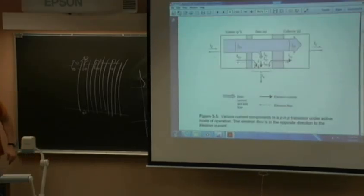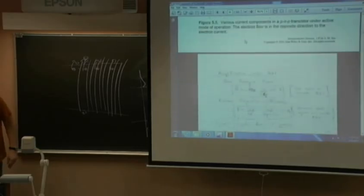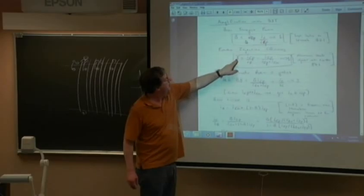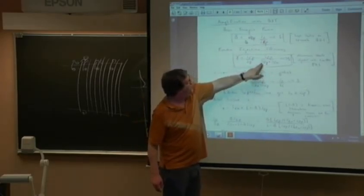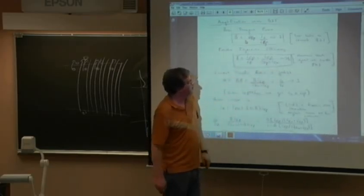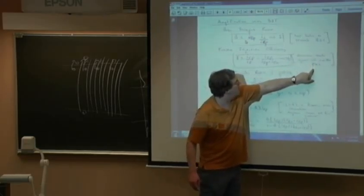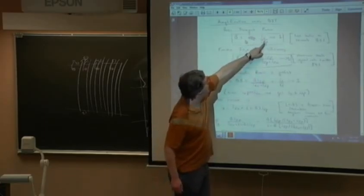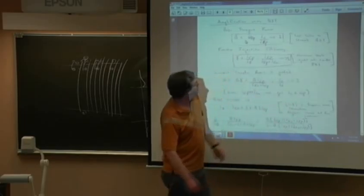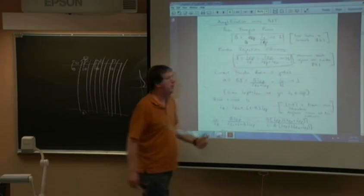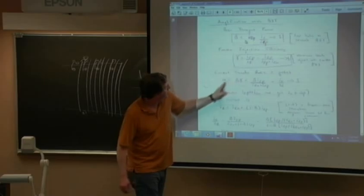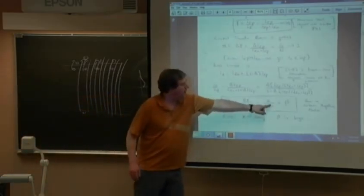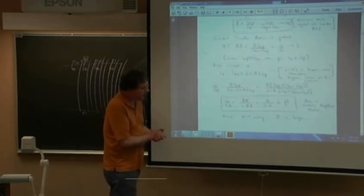Emitter injection efficiency γ is the ratio of hole current from the emitter over total emitter current (holes plus back-injected electrons). If back-injected electrons were zero, γ would be unity. Base transport factor α_T is collector current over emitter hole current — if holes are lost to recombination, α_T goes below one. The product gives α, and gain β = α/(1-α). The DC beta is the ratio of I_C to I_B shown on the Gummel plot.